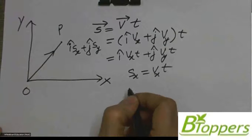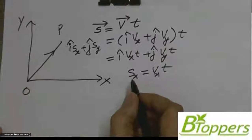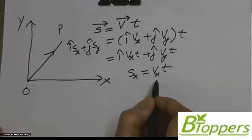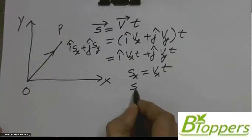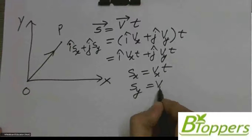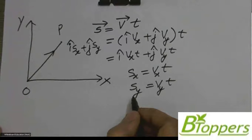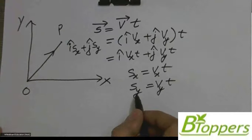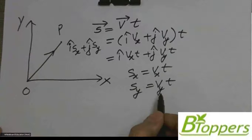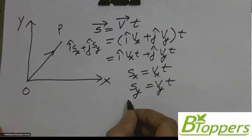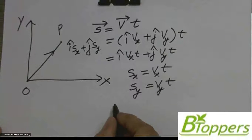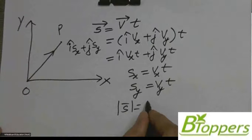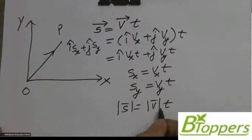You can write sx equal to vx times t — that means the x-component of displacement equals the x-component of velocity times the time interval. Similarly, sy equals vy times t — the y-component of displacement equals the y-component of velocity times the time interval. The magnitude of the actual displacement equals the magnitude of the actual velocity times the time interval.